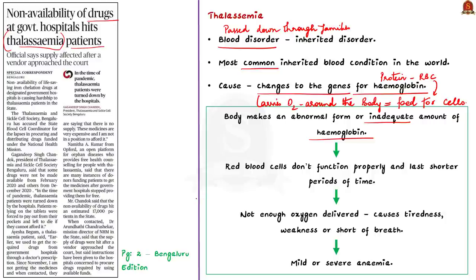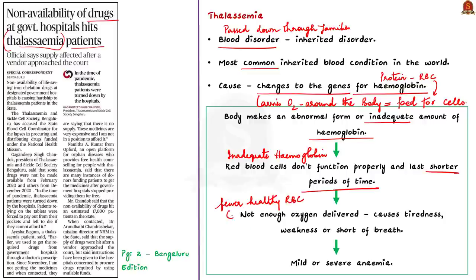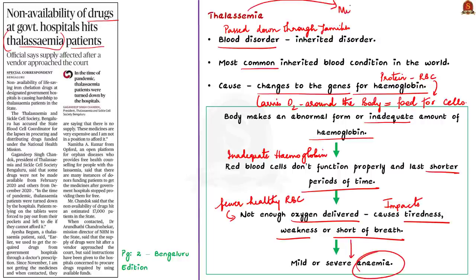When there isn't enough hemoglobin, the body's red blood cells do not function properly and last for shorter periods. There are fewer healthy red blood cells in the bloodstream, resulting in insufficient oxygen delivered to other cells. This causes tiredness, weakness, or shortage of breath — a condition called anemia. Thalassemia thus leads to mild or severe anemia. Note that severe anemia can damage organs and lead to death.